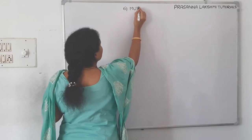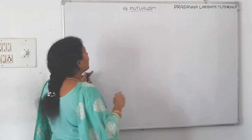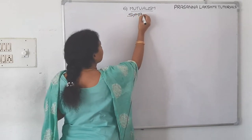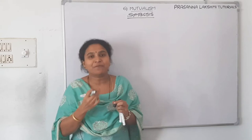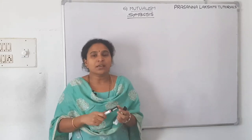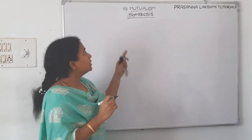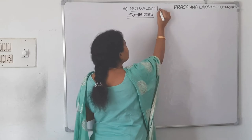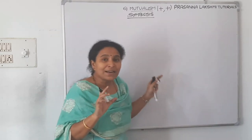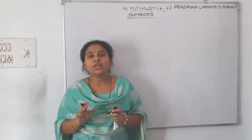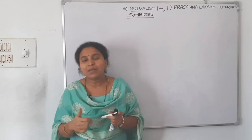Mutualism is the sixth interaction and is also called symbiosis. In a mutualistic association, both species get benefited from each other. Sometimes it is such an obligate association that in the absence of the other partner, an organism cannot complete its life cycle. We represent mutualism with a plus symbol for both species. To understand it better, let us take some examples.